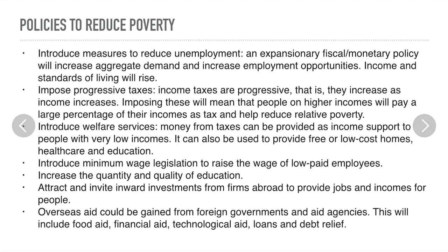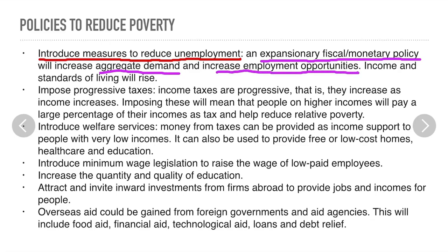Now let's look at the policies to reduce poverty. First, introduce measures to reduce unemployment. This can be through expansionary fiscal policy or monetary policy, which will increase government spending, reduce interest rates, reduce tax rates, and increase the money supply. That will lead to increased aggregate demand, which will cause an increase in employment opportunities, and then income and standards of living will rise as the disposable income of people rises.